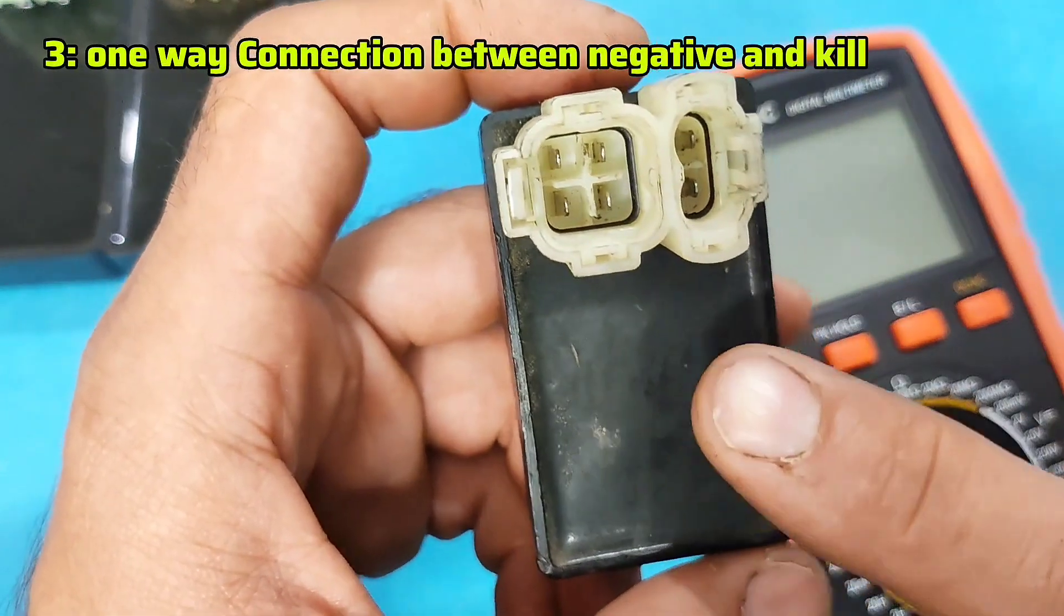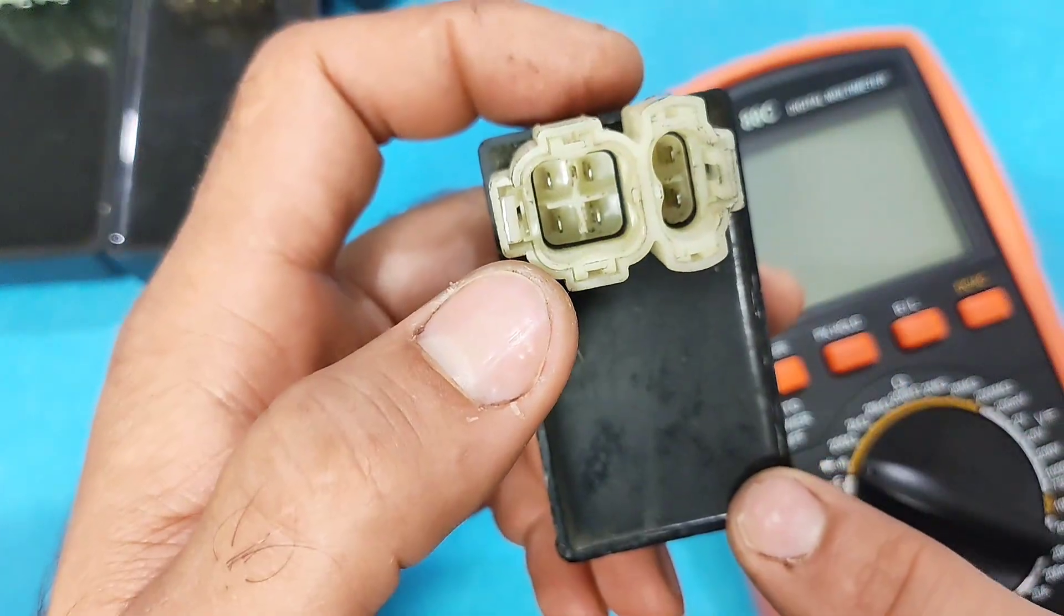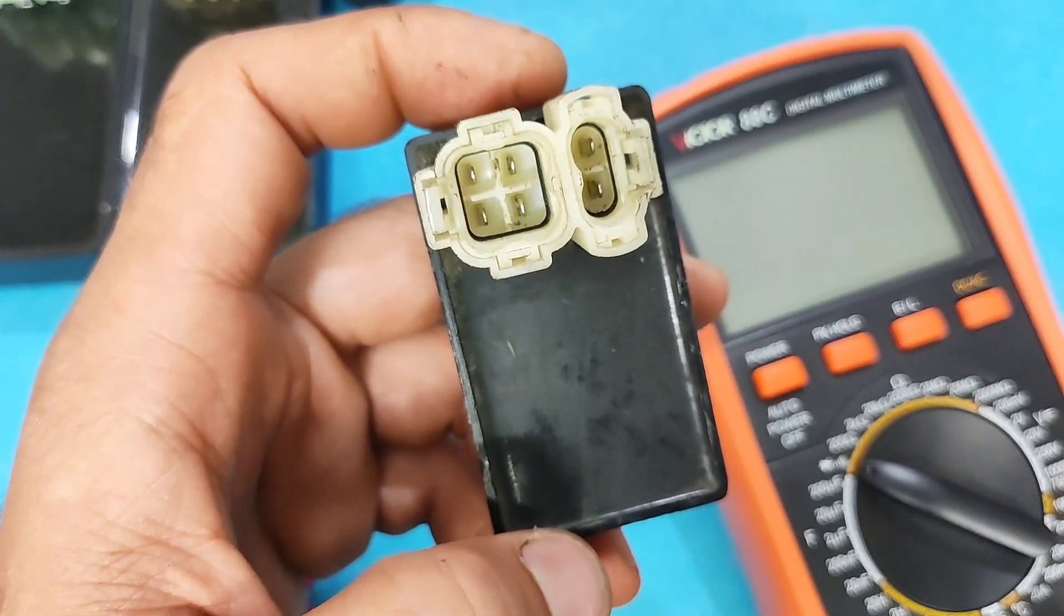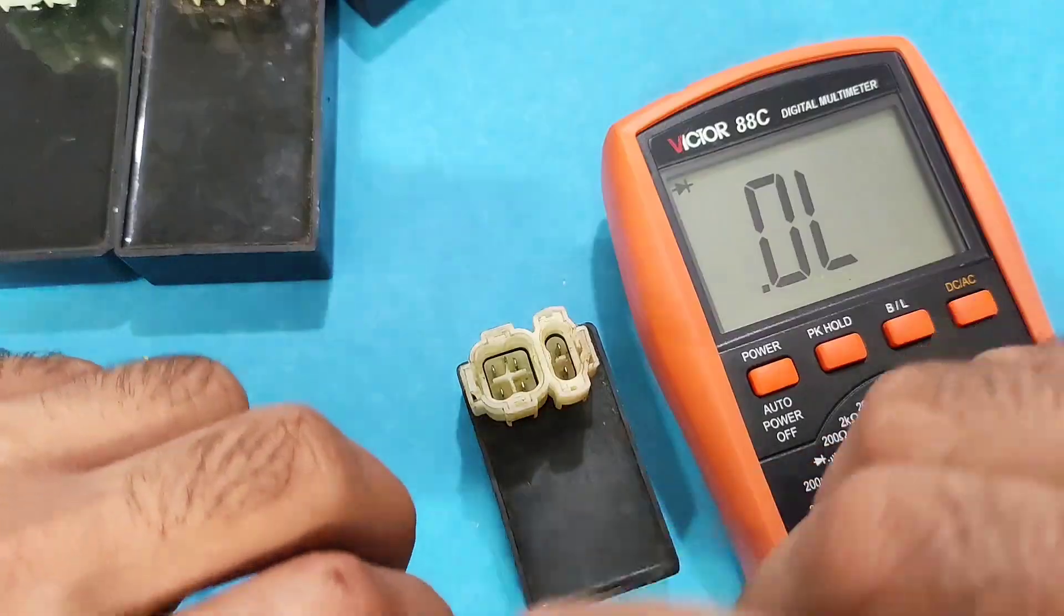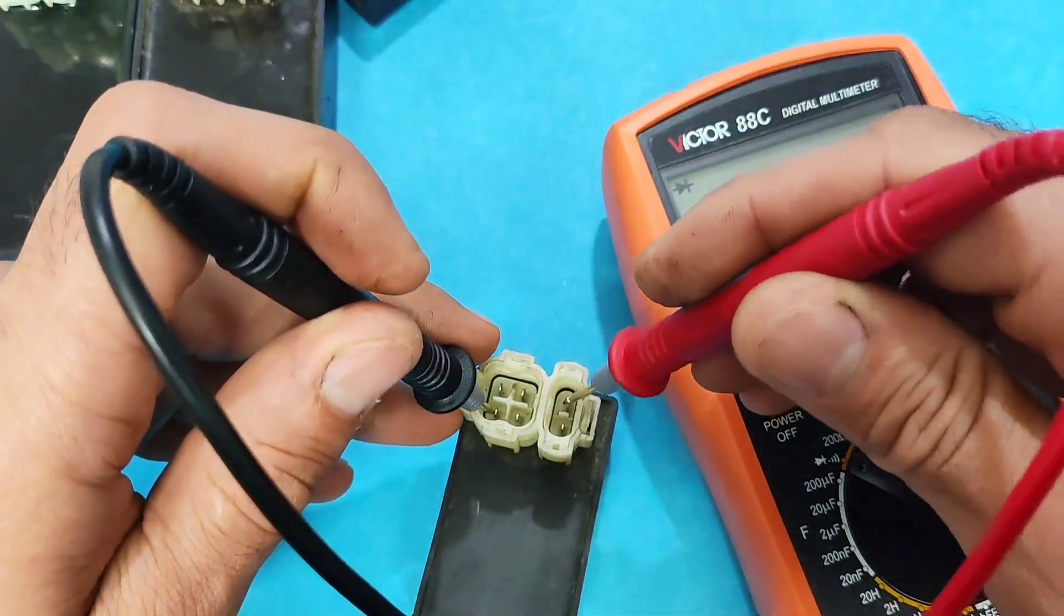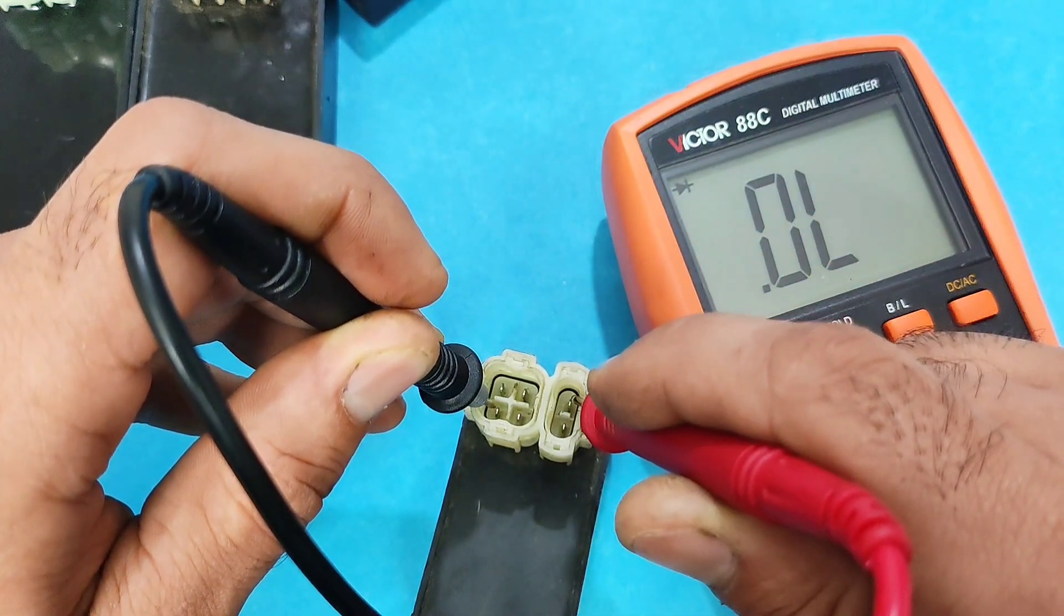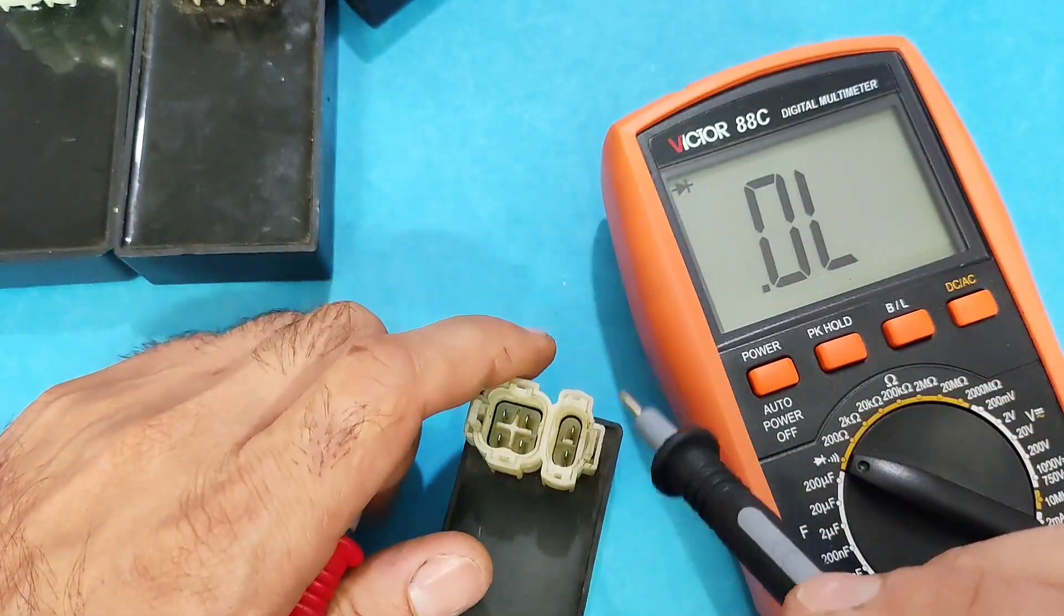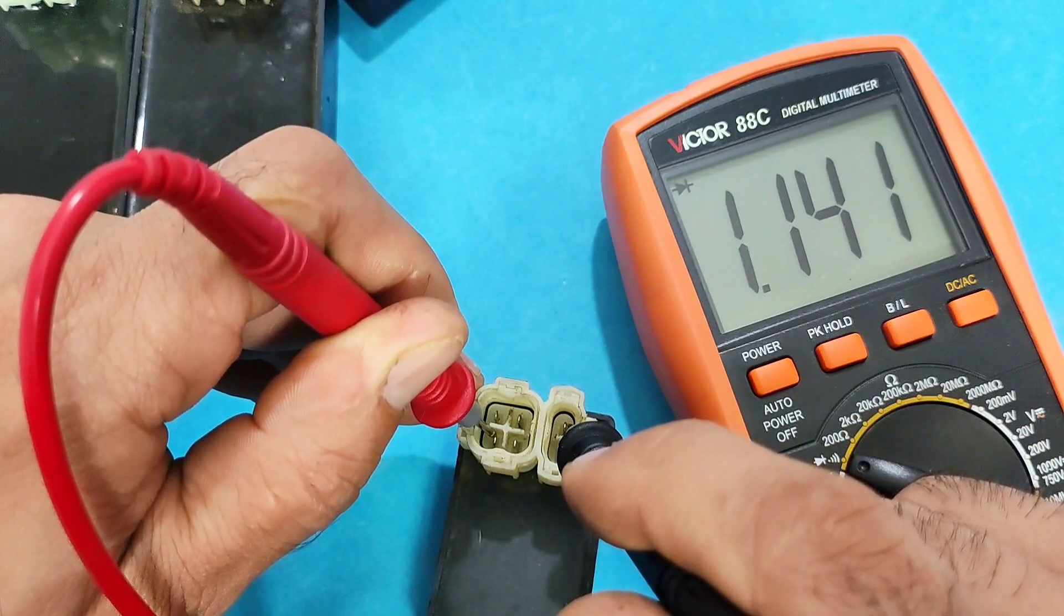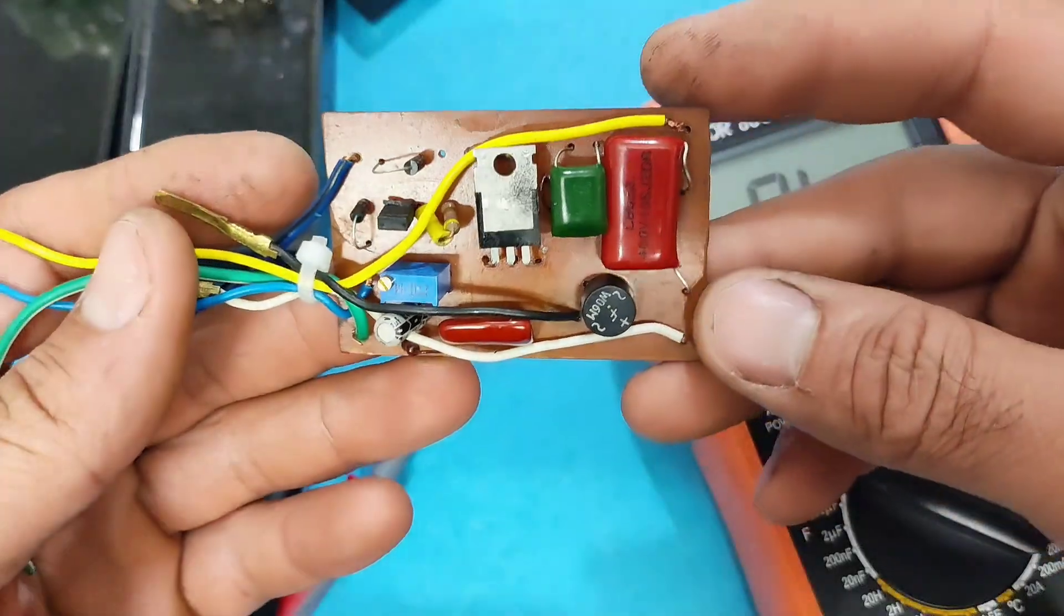In AC CDI there is negative pin, this pin also connects to the kill switch pin. It shows a resistance value from one side only. Look, this is negative, this is kill switch. No function. Switch the probes. We have a resistance value.